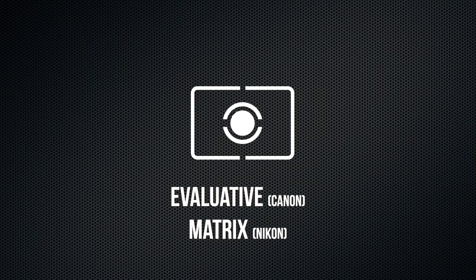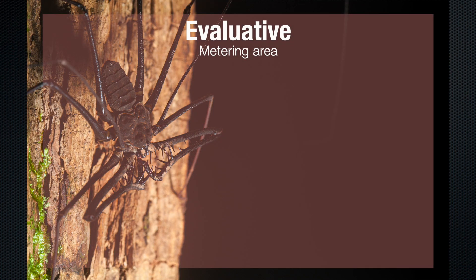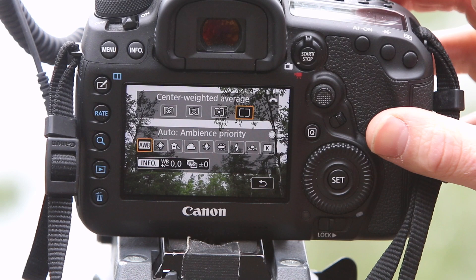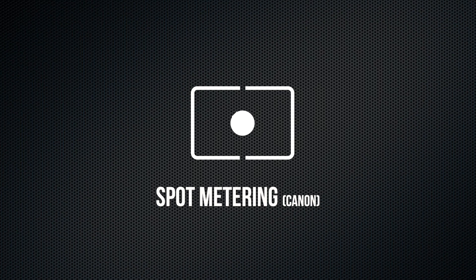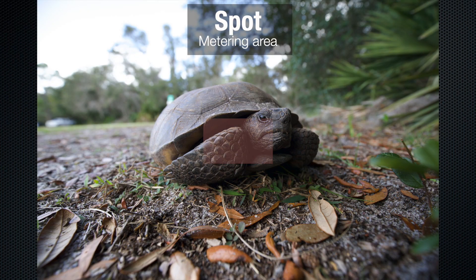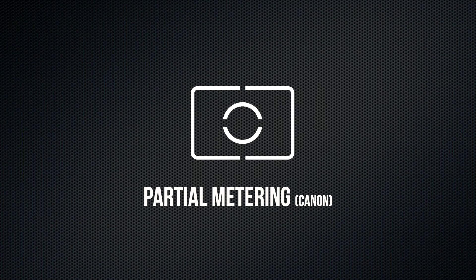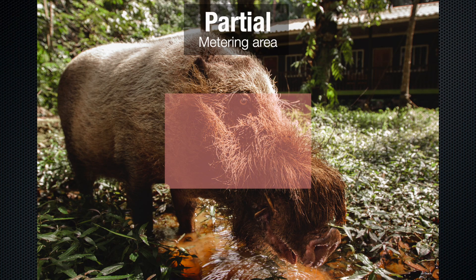On my Canon here, I have these different options to choose from. The evaluative metering — called Matrix on Nikon cameras — is an all-around setting that meshes the whole screen but puts extra emphasis on what the camera is focused on. The center weighted metering is similar to evaluative in that it meshes the light from the whole frame, but it does not take the focus point into consideration; instead, it strongly favors the reading at the center of the image and then averages that out for the whole frame. The other end of the spectrum would be spot metering, which meshes only the light in a small area of the center of the screen. And the last one is partial metering, which is a bit more forgiving than spot metering and meshes the light over a larger area.